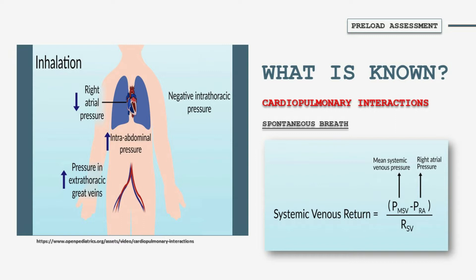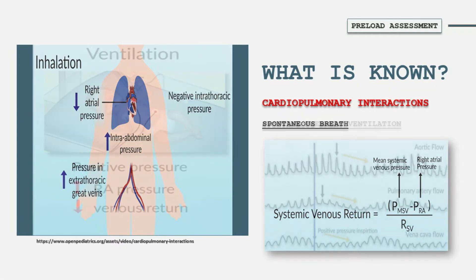Systemic venous return can therefore be defined as the mean systemic venous pressure minus the right atrial pressure, over the resistance in the systemic veins.